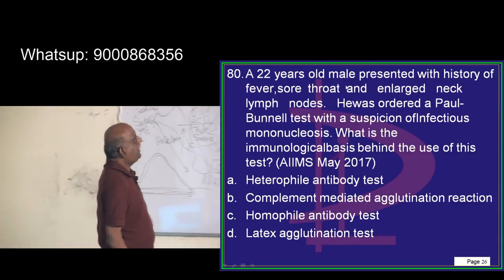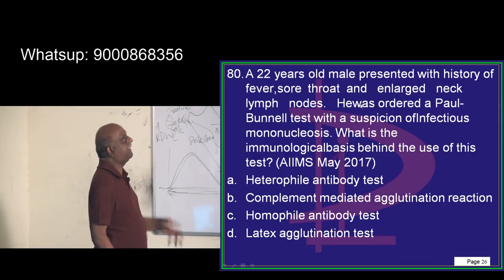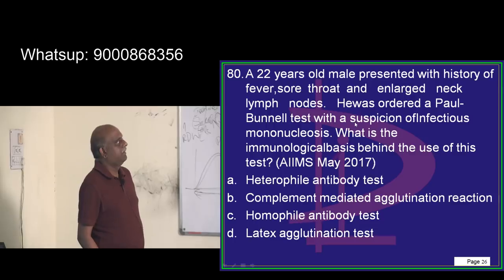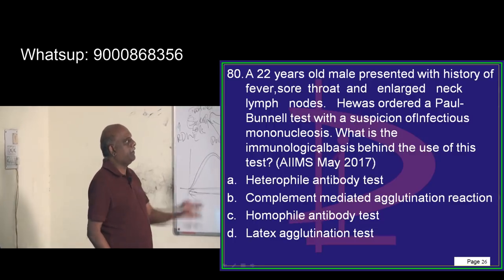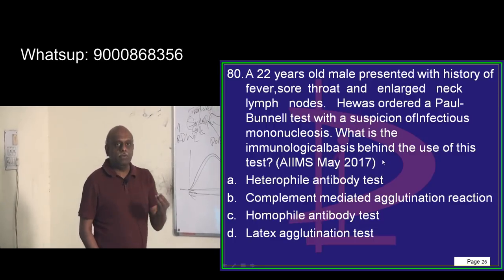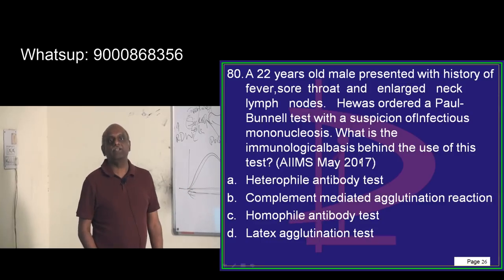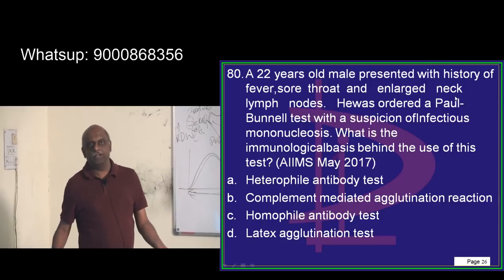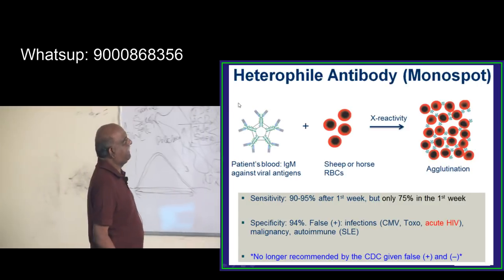A 22-year-old male presented with a history of fever, sore throat, and enlarged neck lymph nodes. Paul Bunnell gives a suspicion of infectious mononucleosis. What is the immunological basis for conducting the Paul Bunnell test?